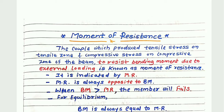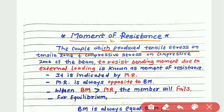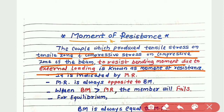Let us see one by one what is the exact meaning of moment of resistance. The definition says: the couple which produces tensile stress on the tensile zone and compressive stress on the compressive zone of the beam to resist bending moment due to external loading is known as moment of resistance. When a particular external loading is applied on a beam, compressive stresses develop in the compression zone and tensile stresses develop in the tension zone. The couple produced by those two stresses to resist the bending moment is called moment of resistance.